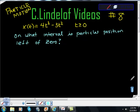Okay, C. Lindelof Videos, AP Calculus, Particle Motion. This is a really interesting question. They give us this position function, x(t) is equal to 4t³ minus 3t², where t is greater than 0, and they say on what interval or intervals is the particle's position left of 0?